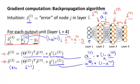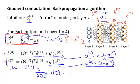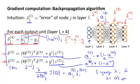The derivation is surprisingly complicated and involved. But if you just do these few steps of computation, it's possible to prove via a somewhat complicated mathematical proof that if you ignore regularization, then the partial derivative terms you want are exactly given by the activations and these delta terms. This is ignoring lambda, or alternatively if the regularization term lambda were equal to zero. We'll fix this detail later about the regularization term. By performing backpropagation and computing these delta terms, you can pretty quickly compute these partial derivative terms for all of your parameters.